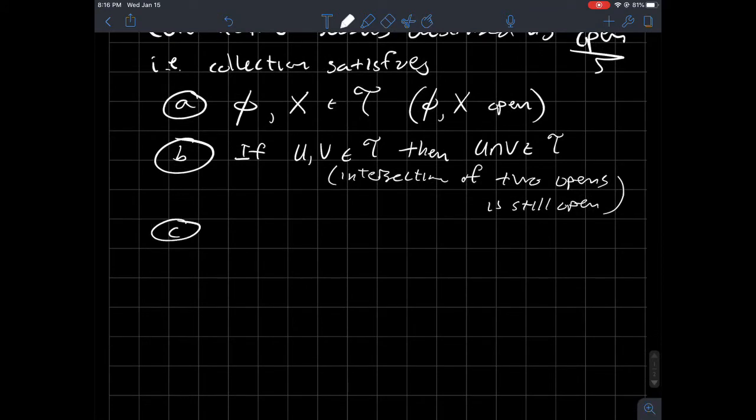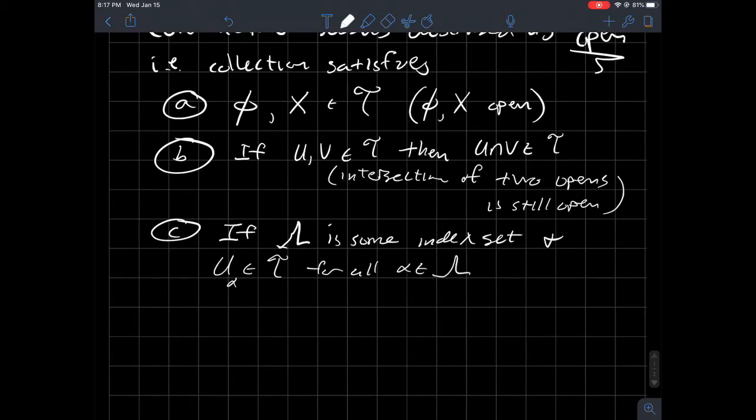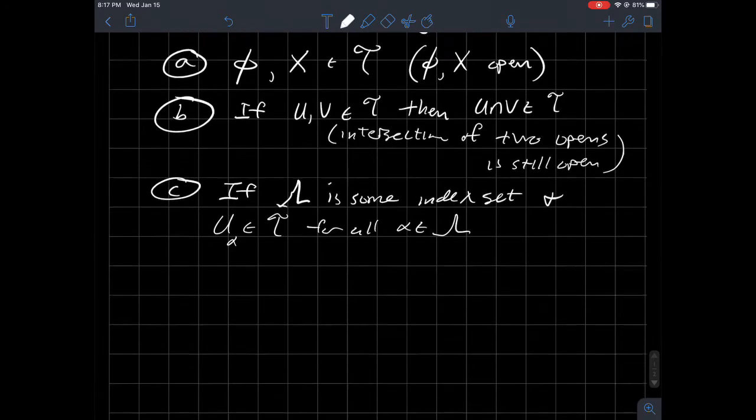And then the third thing I need to have happen is if, let's say, lambda is some index set. It's the natural numbers. Maybe it's like one through five. It can be infinite. It can be finite. So it's some index sets. And let's say U alpha is in T for all alpha and lambda. So this is getting confusing in a hurry. What am I saying here? Let's say that I've just got a whole bunch of things that are in T. That's all I'm trying to say in a nutshell. Maybe there's five sets U alpha in T like U one through U five, or maybe there's infinitely many of these sets U in T. The point is, I should be able to put each of these U's together in some way, such as a union,